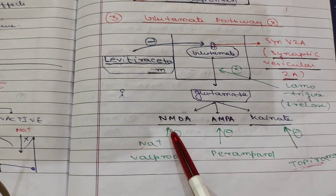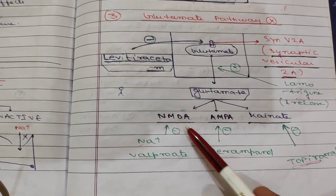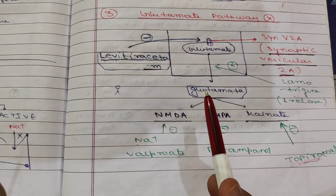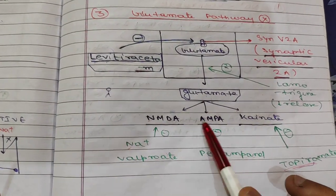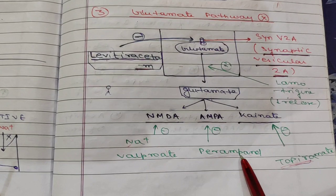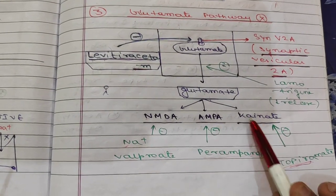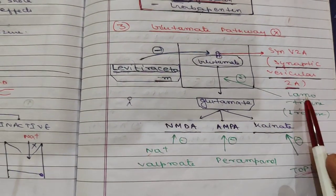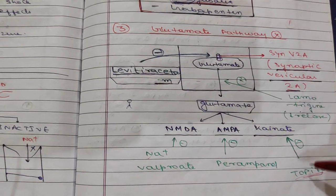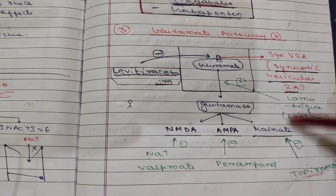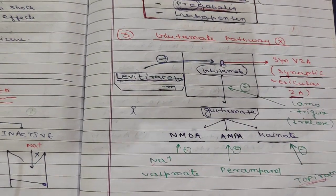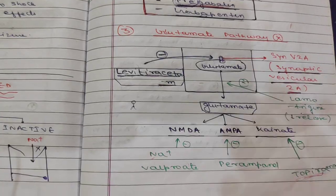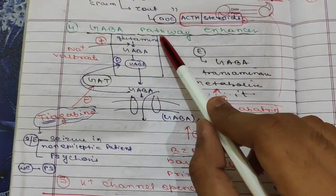Glutamate acts on its receptors: NMDA, AMPA, and kainate. We can inhibit at the receptor level — NMDA is blocked by sodium valproate, AMPA by perampanel, and kainate by topiramate. Topiramate and lamotrigine appear in all three categories, making them broad-spectrum drugs.